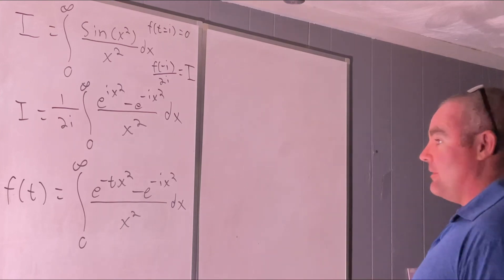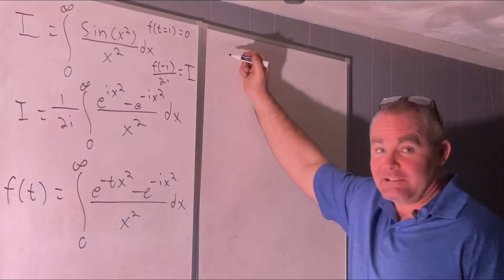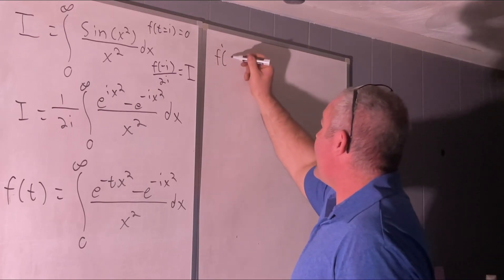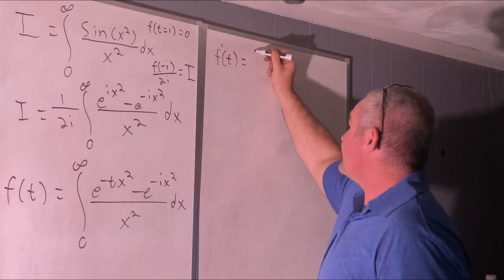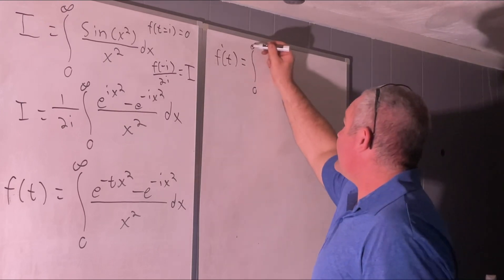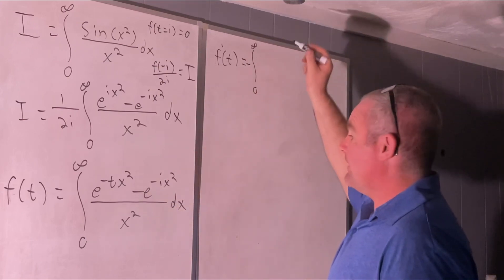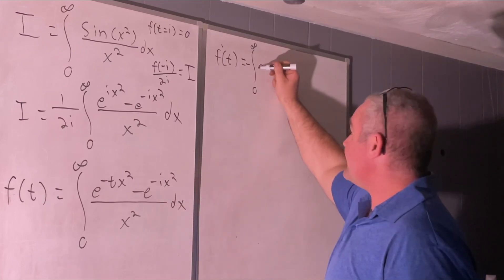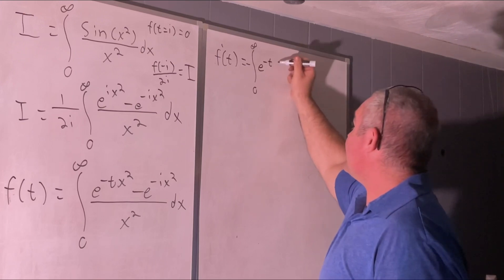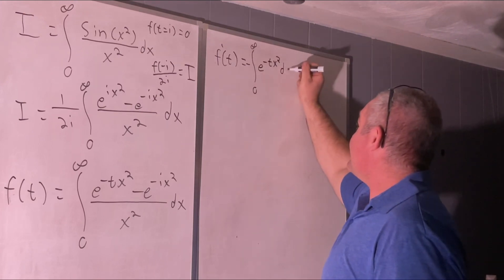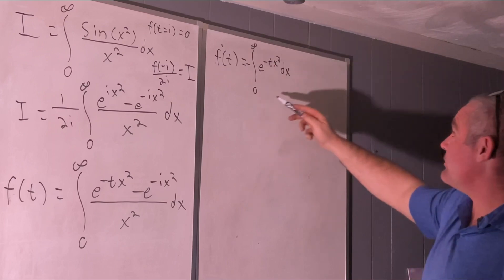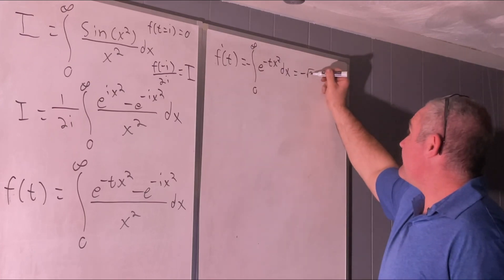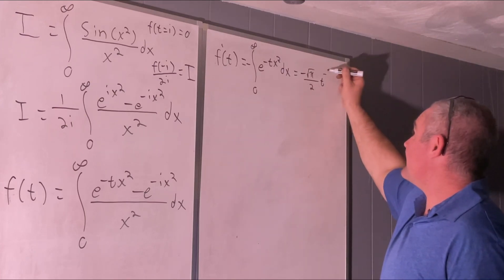We're going to take f prime of t using the Leibniz rule for differentiation under the integral sign. That gives us the integral from 0 to infinity — the x squared cancels out, as does the last term — and we're left with e to the negative tx squared dx. That's going to be equal to negative square root of pi over 2 times t to the negative one half.